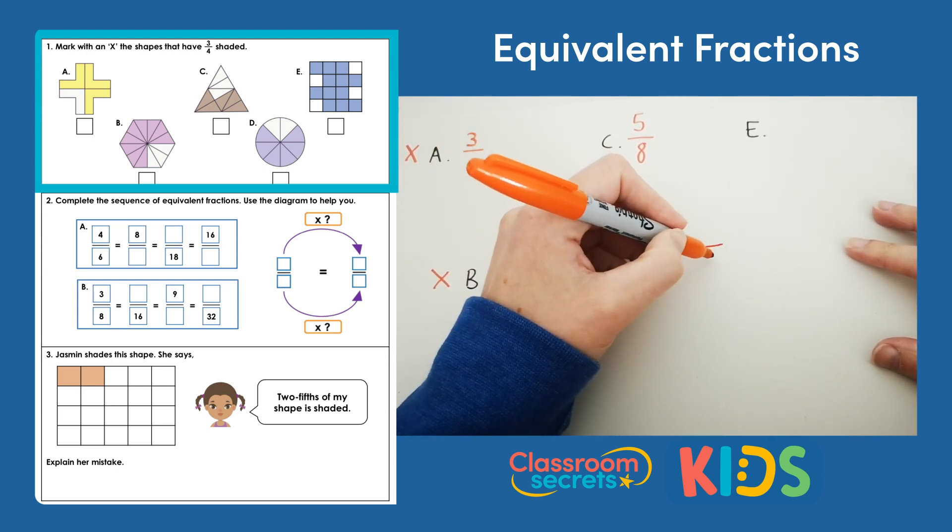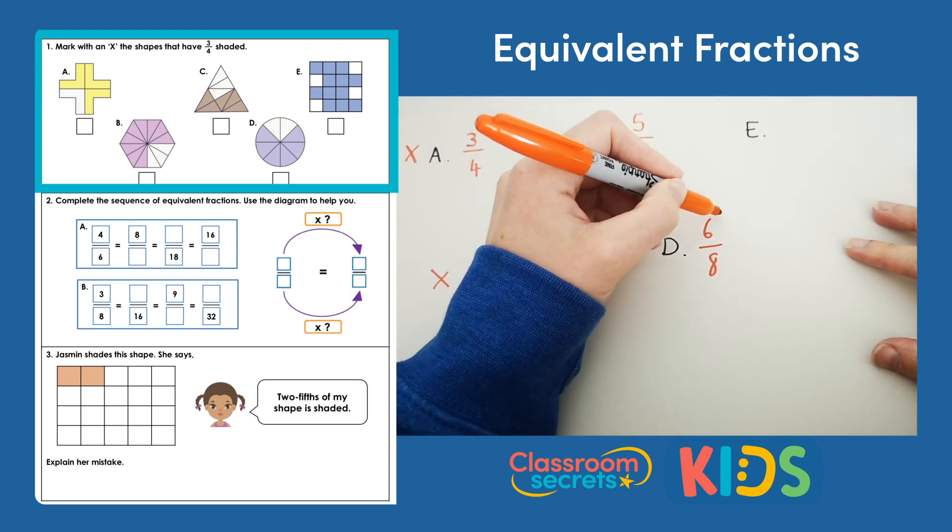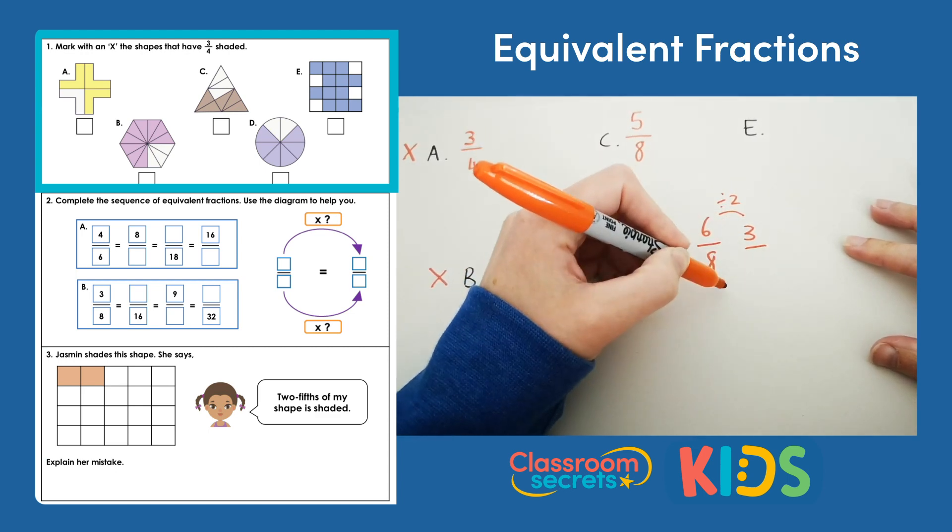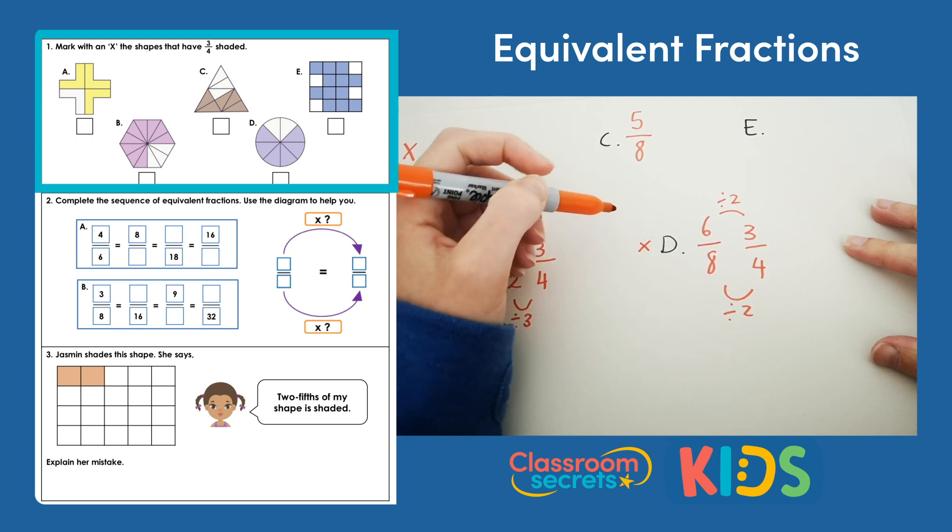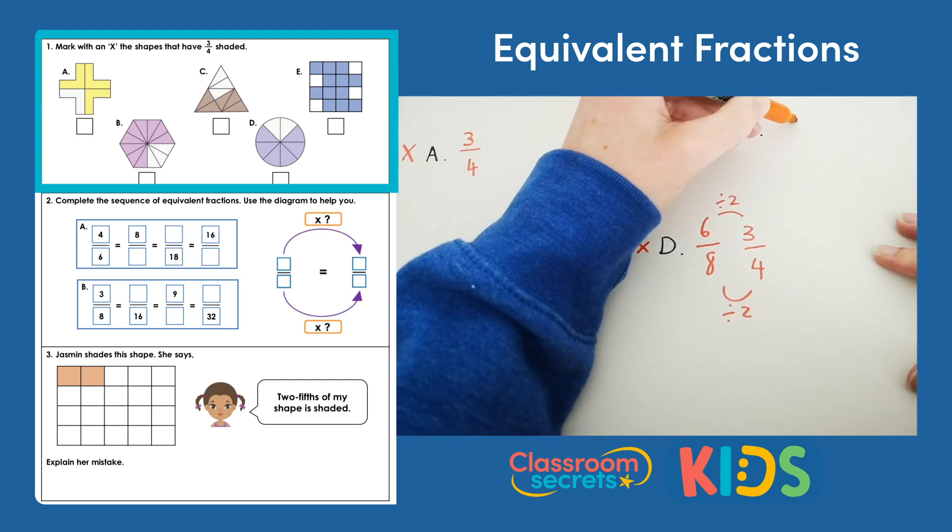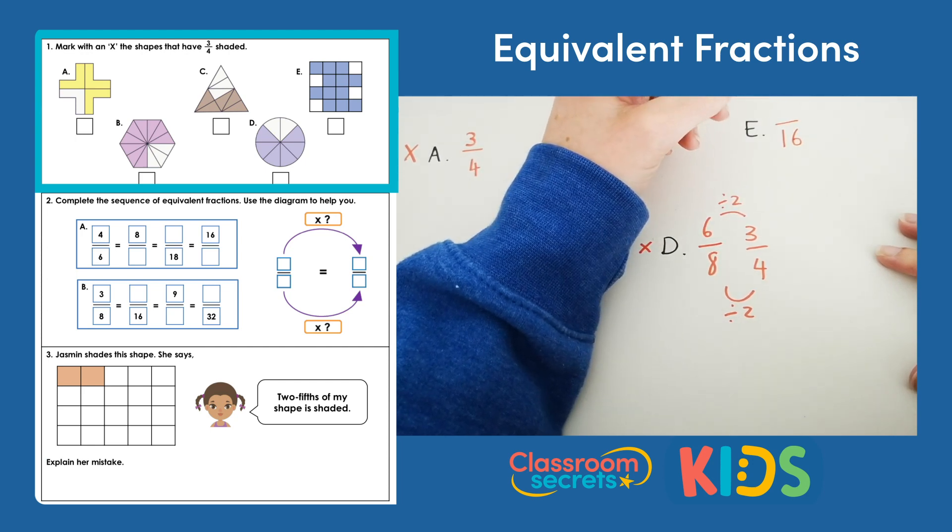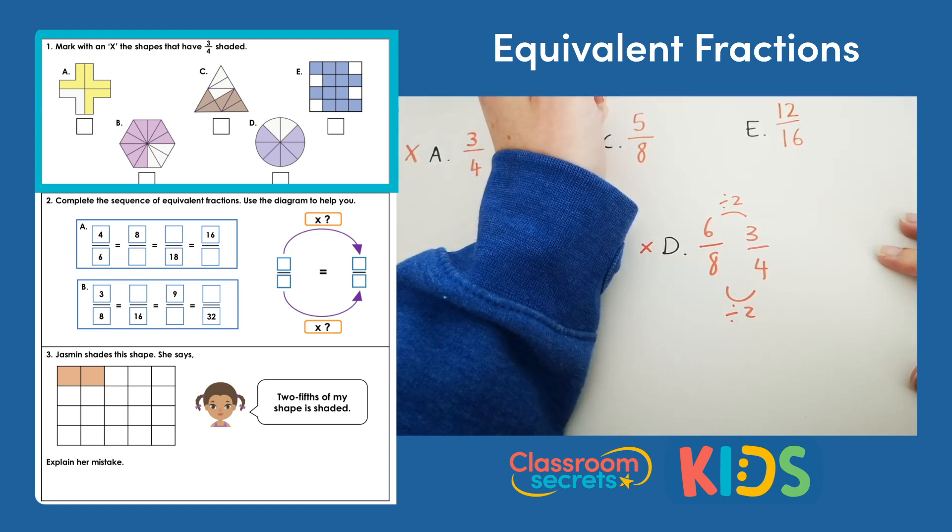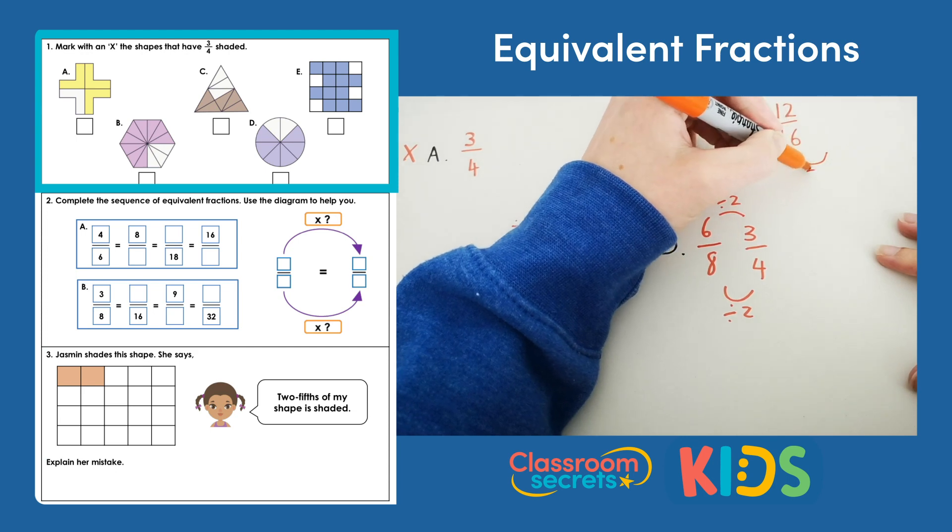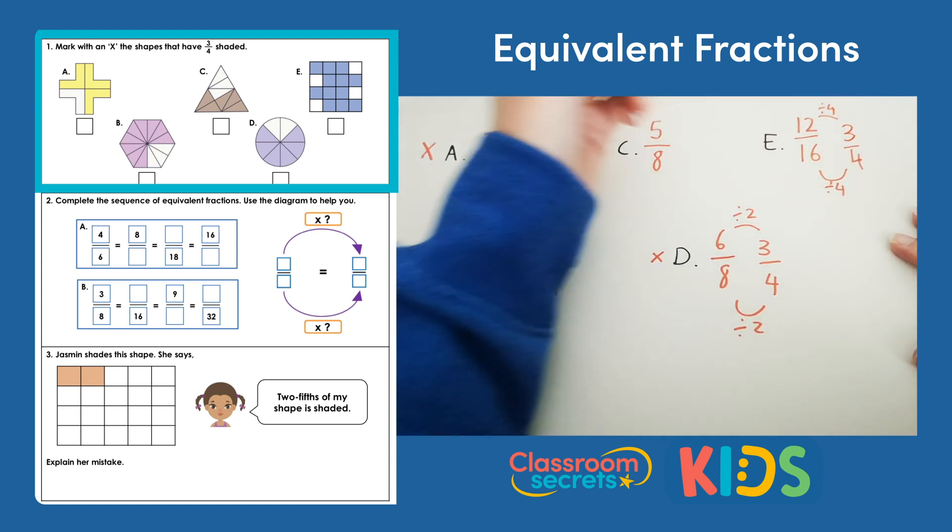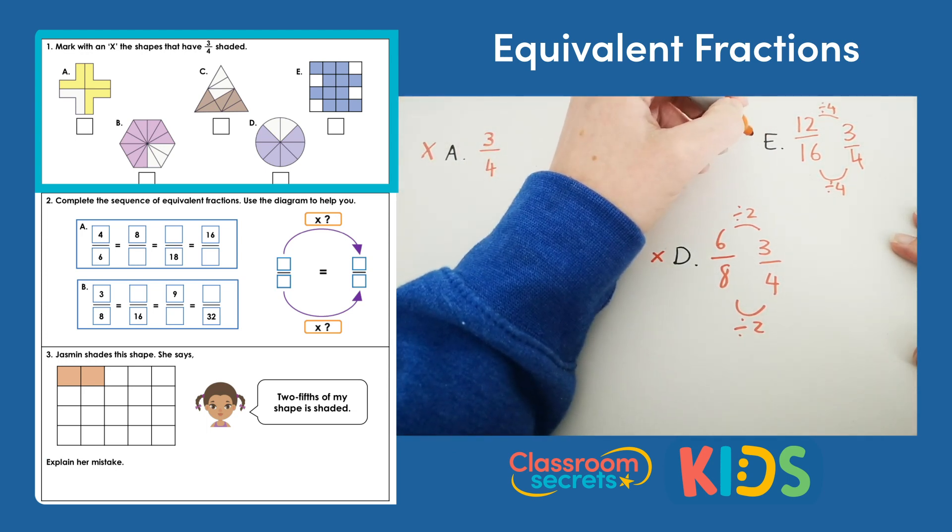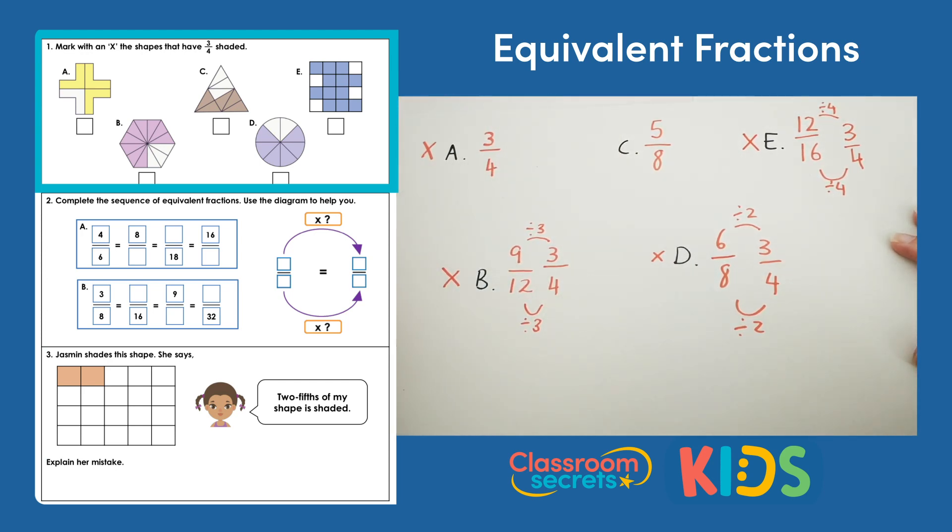Shape D has been split into eight pieces and six of those have been shaded in. If we divide six by 2 we get 3, and if we divide 8 by 2 we get 4, and that shows us that six eighths is equivalent to three quarters, so we can put an X in the box next to D. Finally shape E. Shape E is being divided into 16 pieces and 12 of those 16 pieces have been shaded in blue. If we divide 16 by 4 we get 4 for our denominator, and if we divide 12 by 4 we get 3. So E is also equivalent to three quarters and we can put a cross in the box next to E. So the only box that shouldn't have a cross is C because A, B, D and E all have fractions shaded that are equivalent to three quarters.